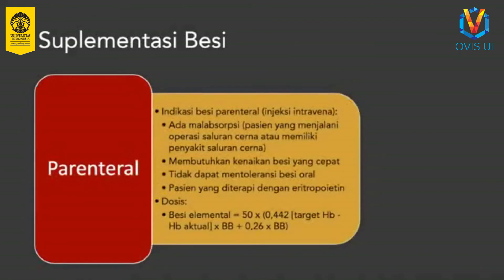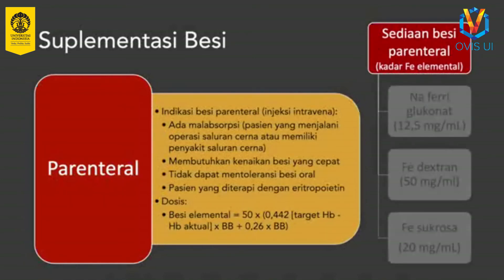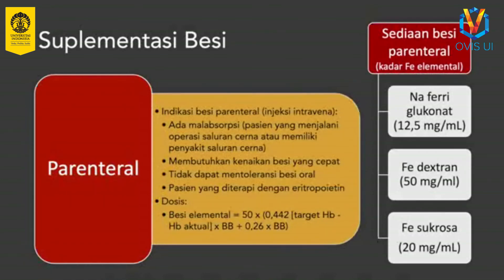Besi parenteral diberikan pada kondisi khusus di mana pemberian oral tidak dapat ditoleransi atau mencukupi kebutuhan besi. Besi parenteral umumnya diberikan dengan injeksi intravena. Indikasi besi parenteral antara lain malabsorpsi karena gangguan saluran cerna, pasien membutuhkan kenaikan besi yang cepat, pasien tidak dapat mentoleransi besi oral, dan pasien yang akan diterapi dengan eritropoietin. Dosis besi parenteral disesuaikan dengan peningkatan Hb yang diharapkan dan berat badan pasien. Beberapa sediaan besi parenteral yang digunakan adalah natrium feroglukonat, ferodextran, dan ferosukrosa.